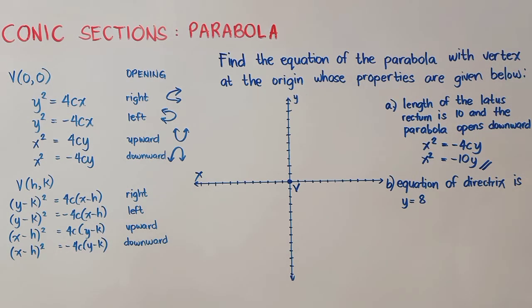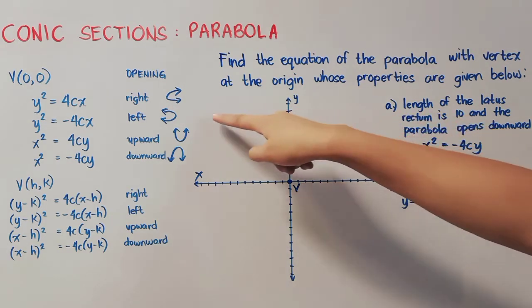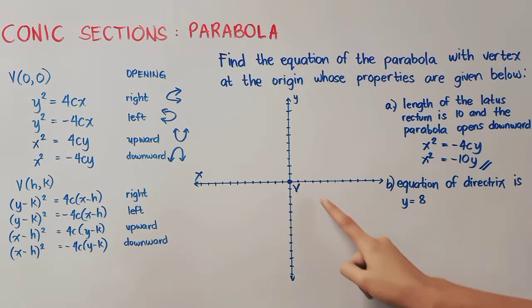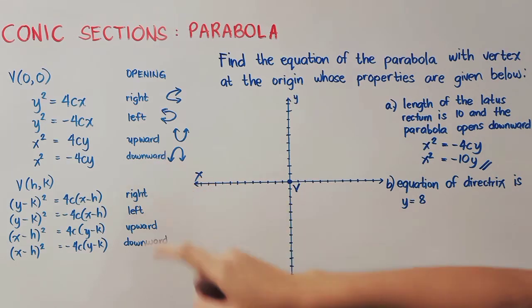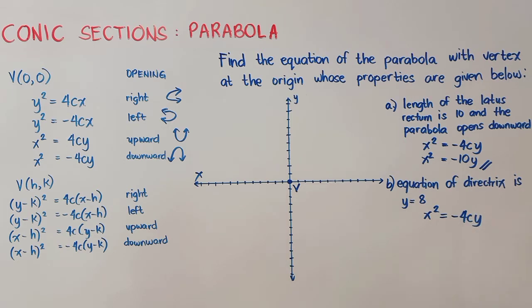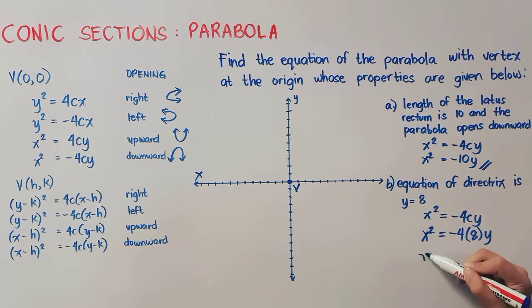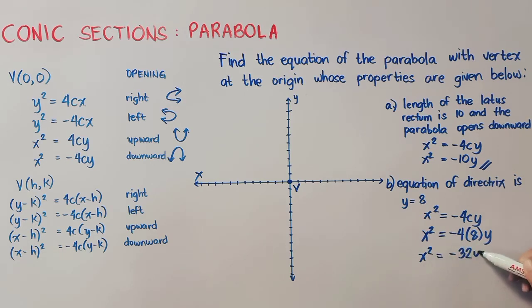Let's proceed to (b). The equation of the directrix is y = 8. That line is found on the y-axis, so that is in this portion — this is where our directrix is located. That means our parabola opens downward. We will still be using the same form: x² = −4cy. Remember that our c is the length from the vertex going to the directrix, so our c here is 8. We will multiply −4 and 8, which gives us −32. Therefore, our final answer is x² = −32y.